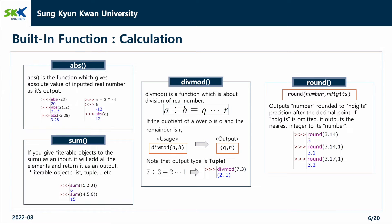First, abs is the function which gives absolute value of input real number as its output. As an example, it can be seen that all negative values become positive. The second is the sum function. If you give iterable objects to sum as an input, it will add all the elements and return it as an output.